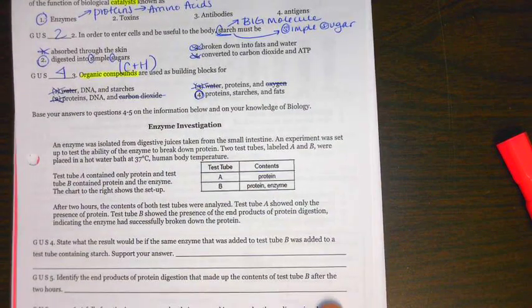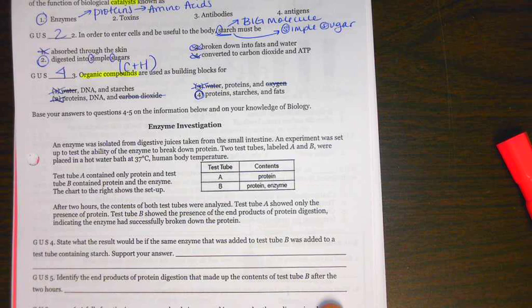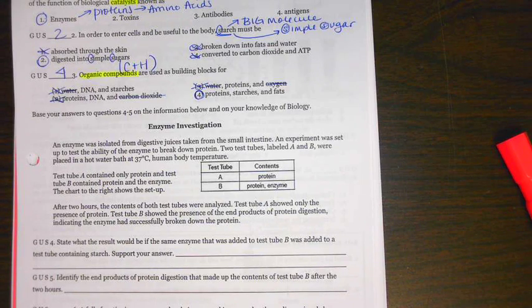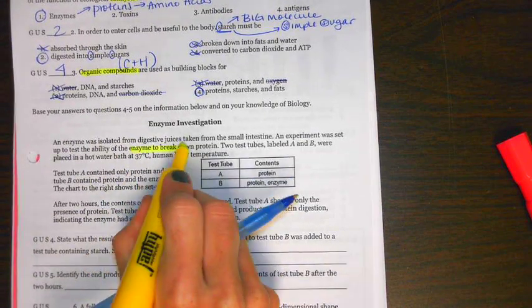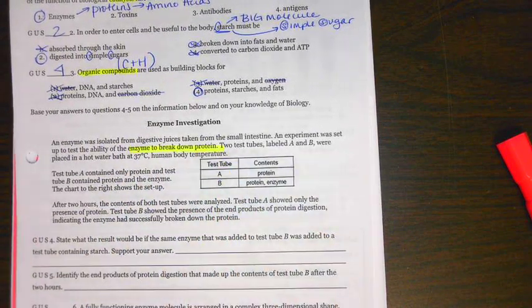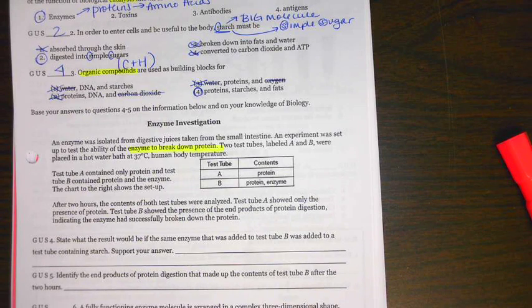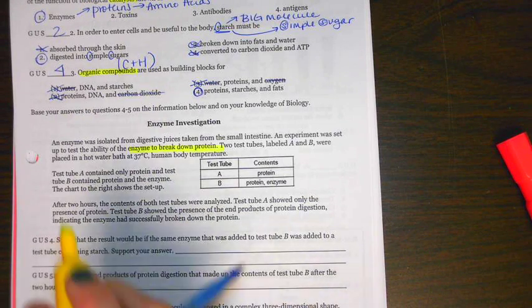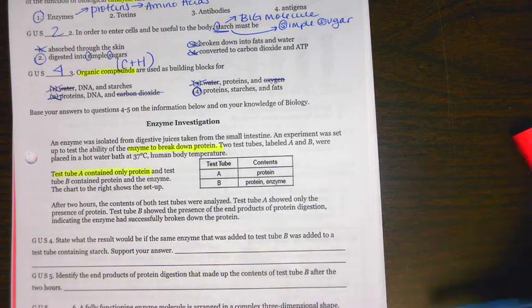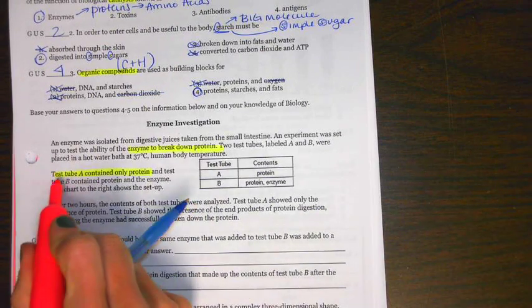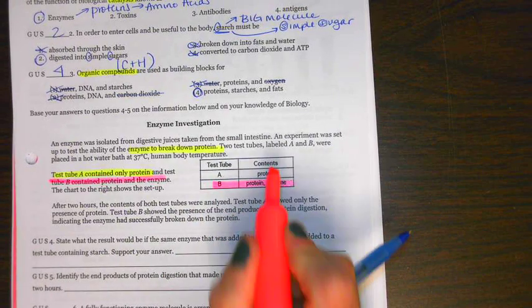Next one has a big, long paragraph. Remember, please read the whole thing. It probably gives you little hints to help. It says, an enzyme was isolated from digestive juices taken from the small intestine. An experiment was set up to test the ability of the enzyme to break down protein. We want to see if this enzyme can break down protein. Two test tubes, A and B, were placed in a hot water bath of 37 degrees Celsius, or the human body temperature.